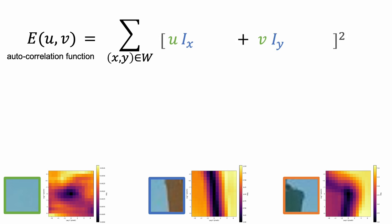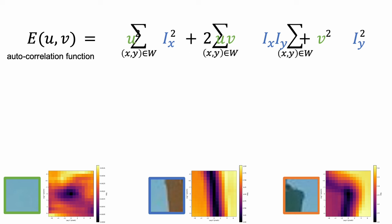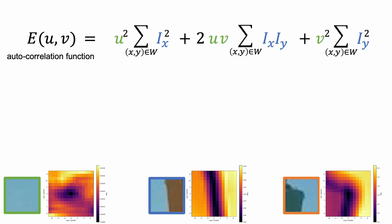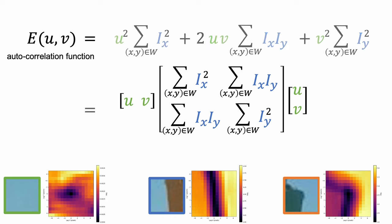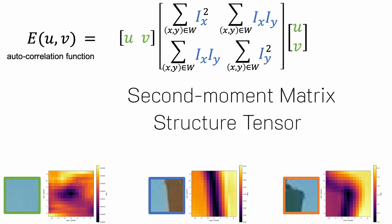Now, let's expand the quadratic and move the displacement vector U and V out of the summation over a local window. This allows us to write the quadratic equation with matrix representation. We call this matrix second moment matrix or structural tensor.